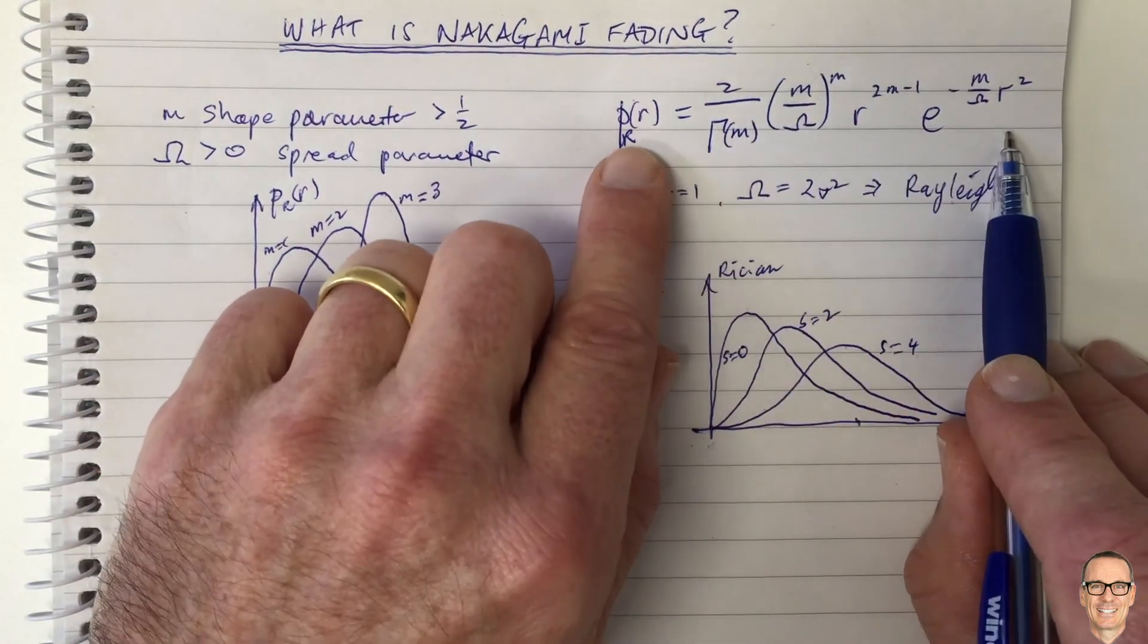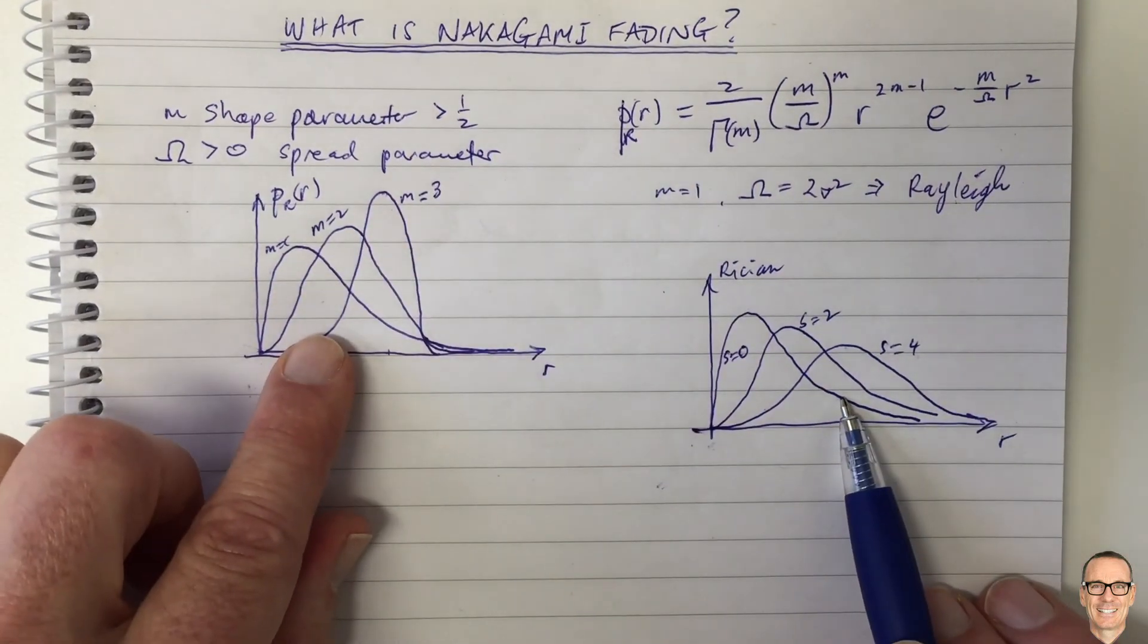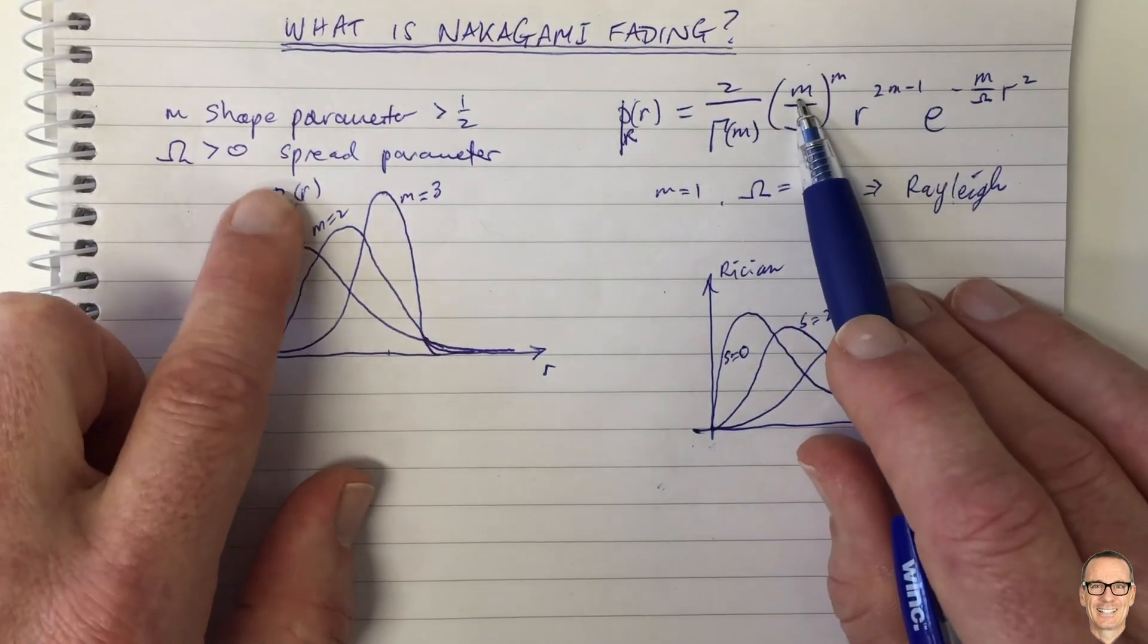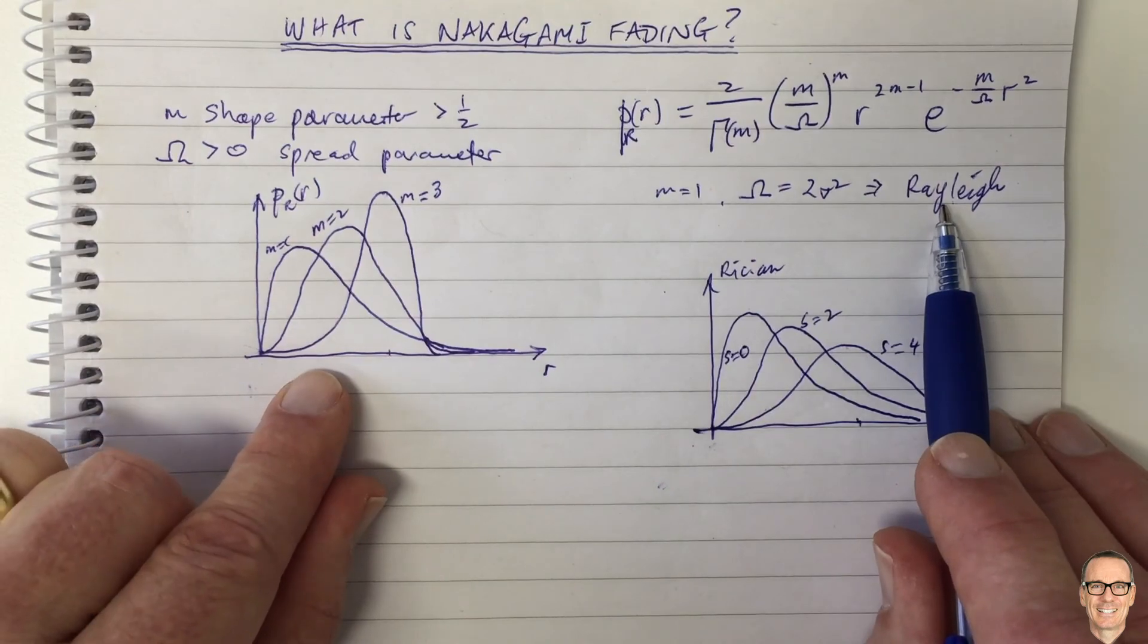They're simply different expressions for a probability density function and they match well with measurements in different scenarios, so they're both useful. And they both come down, if you pick particular values of parameters, they both have Rayleigh fading as a special case.